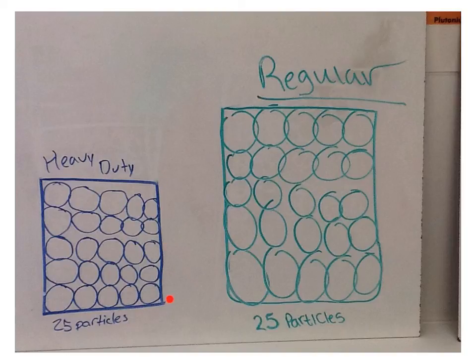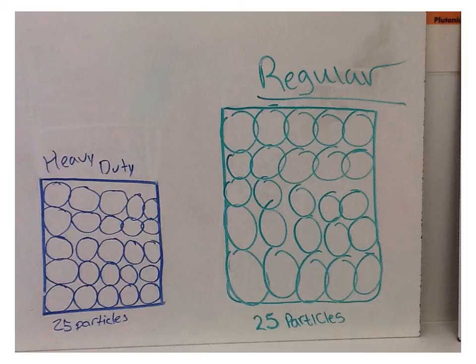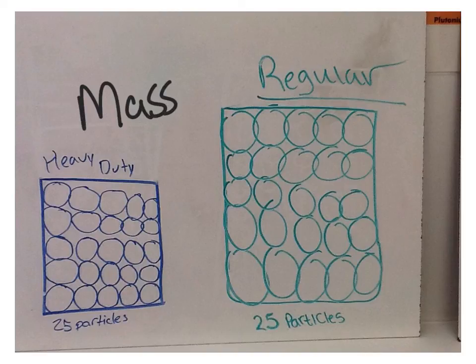This group, the way they have it drawn, the volume — or the amount of space it takes up — looks like it's smaller than the regular aluminum foil. I would rather have the heavy-duty be the thicker one and the regular be the thinner one. Now take a look at the number of particles — the number of particles determines the mass. This is showing 25 particles in the heavy-duty and 25 particles in the regular.